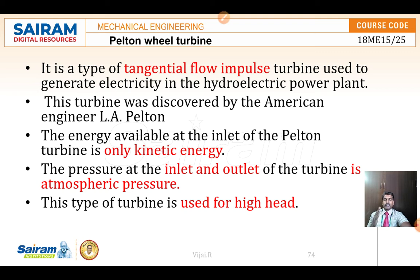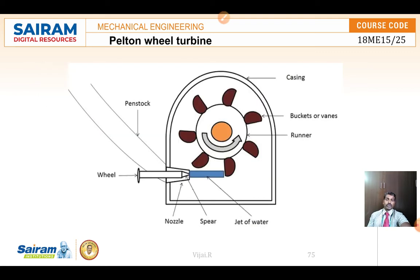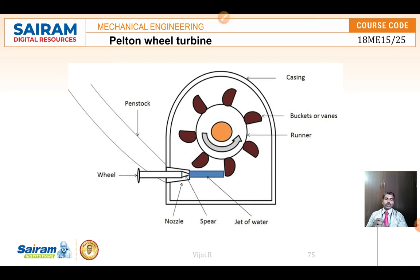The pressure at the inlet is atmospheric pressure, and this turbine is used for high head applications. Looking at the construction: there is a penstock where water flows from the dam. At the end of the penstock, there is a nozzle. The nozzle directs the water over the runner blades. The buckets or vanes are arranged on the periphery of the shaft — this assembly is called the runner. The runner rotates when water hits on the buckets.